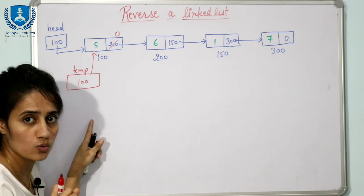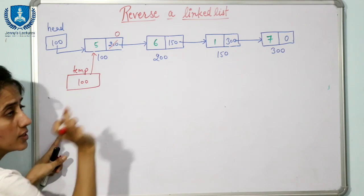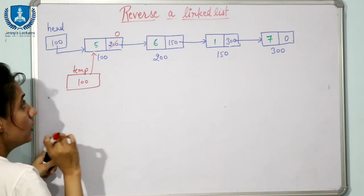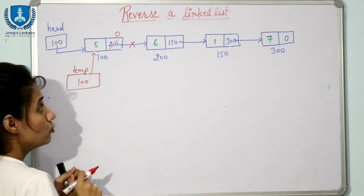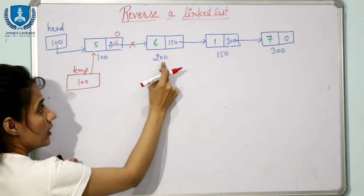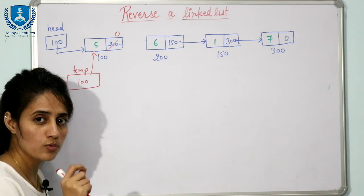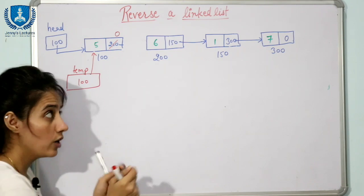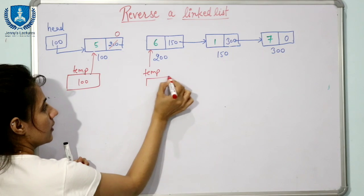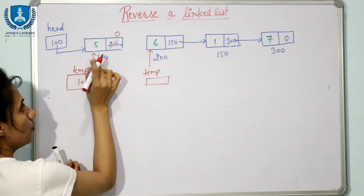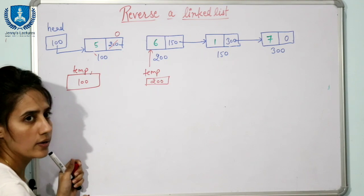We have to maintain the address of the previous node. Right now previous node is zero. This link has now been broken, so we cannot move forward from here. Suppose with some logic we have moved the temp pointer to the next node — now temp contains 200. We need to store the address of the previous node into temp->next, but we've already moved temp, so we need a way to access the previous node's address.